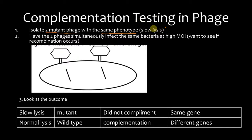So for example, here we're going to look at two phages that produce slow lysis, and then we're going to have the two phages simultaneously infect the same bacteria at high MOI. We want to see if recombination occurs. If you just do one phage per bacteria, you're not going to have recombination because there's only one — so you need a high MOI to allow recombination to occur.